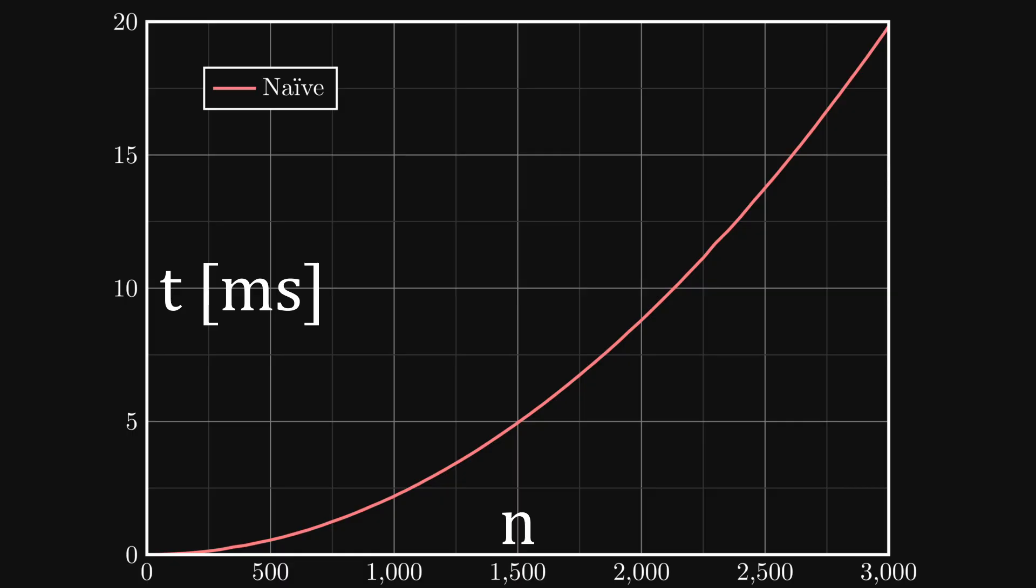As you can see, the curve is clearly quadratic. And that means that if you double the amount of bodies, you quadruple the time it takes.